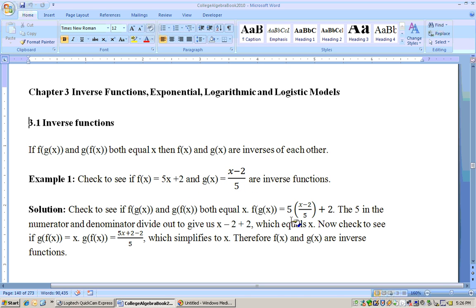Plus 2. That's what I have right here, 5 times x minus 2 over 5 plus 2, because I substituted this in for x. Now all I need to do is simplify this and see if we get x.